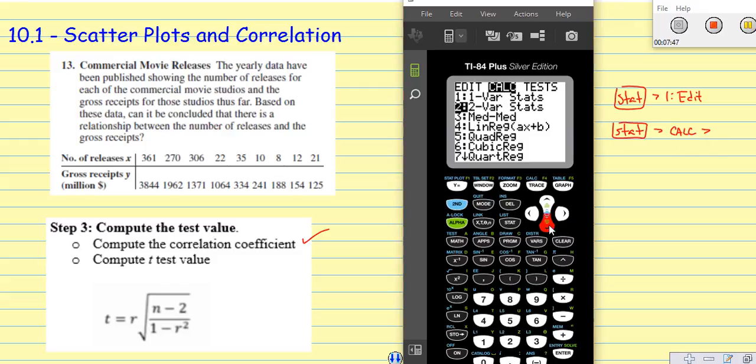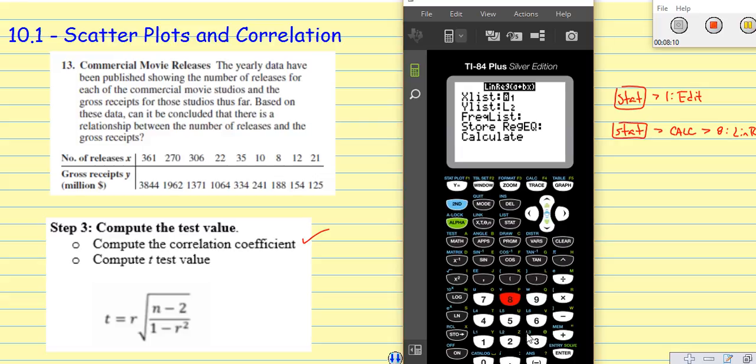Then we're going to move ourselves down to number 8. Number 8 is linear regression. We used this in a previous situation where we were finding the regression, so this is going to be a common thing. Go ahead and we choose number 8. At this point, this is a default situation. As long as you put your numbers in L1 and L2, it knows where to pull it from. Don't worry about the frequency. Just enter, enter, enter, enter.